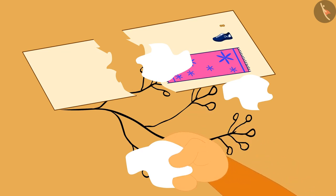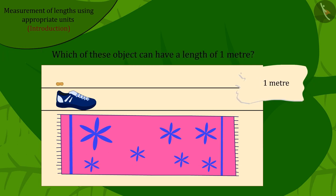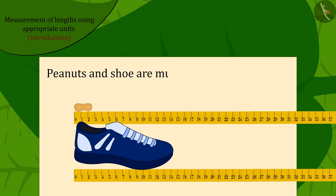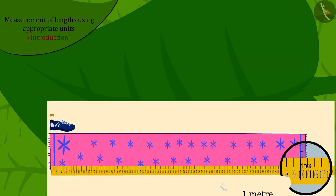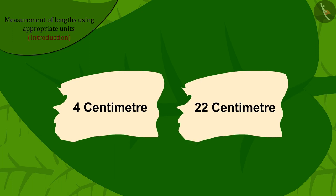One piece of paper had one meter written on it. Kids, can you tell which of these items can be one meter in length? Correct! Peanuts and a shoe are much smaller than one meter. It is possible that the length of the mat is one meter, so the correct answer is the length of the mat.